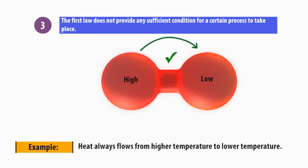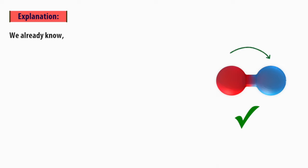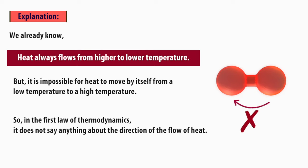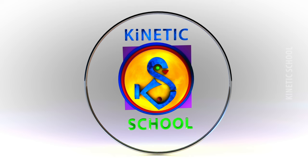Third point, the first law does not provide any sufficient conditions for a certain process to take place. We already know heat always flows from higher to lower temperature. But it is impossible for heat to move by itself from a low temperature to a high temperature. So in the first law of thermodynamics, it does not say anything about the direction of the flow of heat.